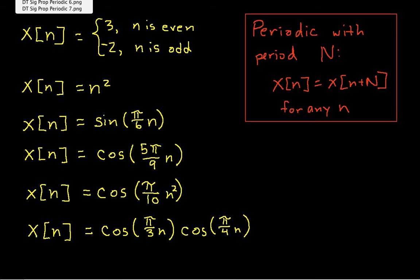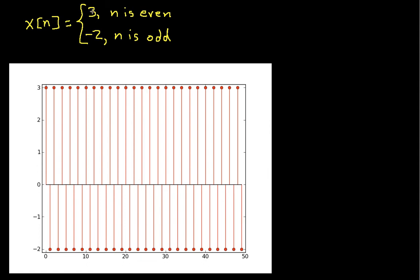If we look at our first signal, x[n] is 3 when n is even, and minus 2 when n is odd. I've graphed this signal here. You can see that this signal is 3 when I have an even value of n, say 0, 2, 4, etc., and minus 2 when n is odd. One of the things that's really helpful in determining whether or not a signal is periodic is to graph it, because your eye is actually very good at discerning patterns.